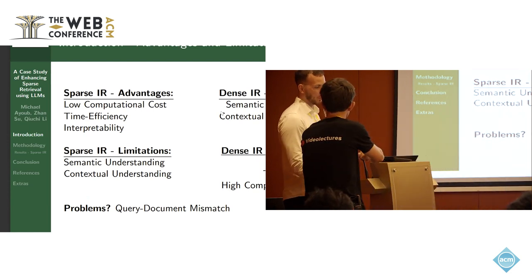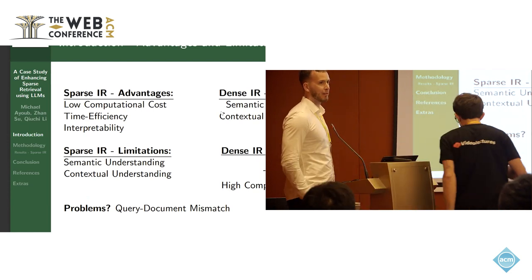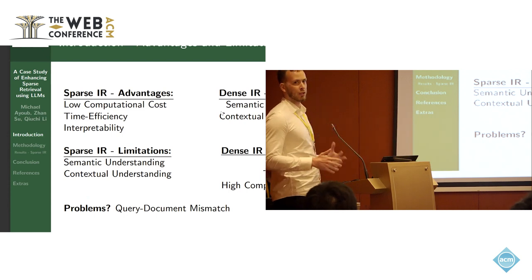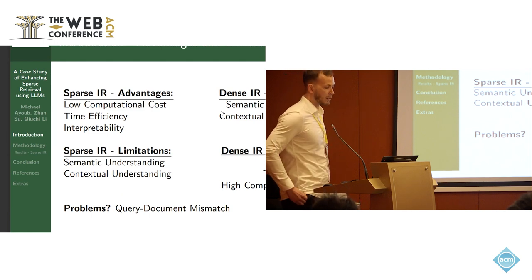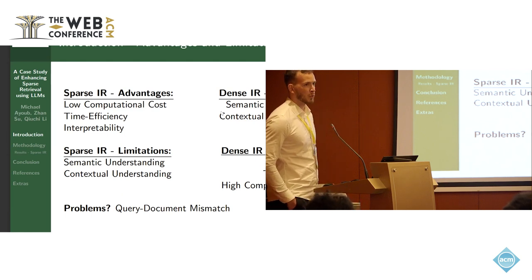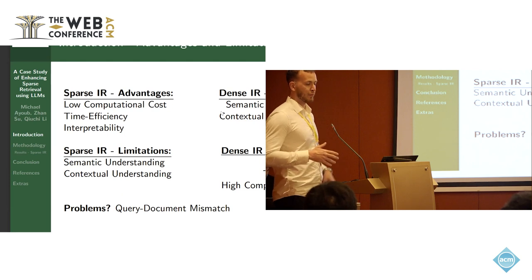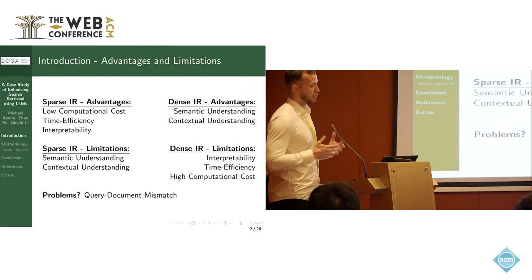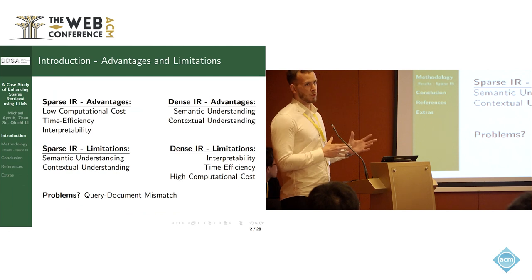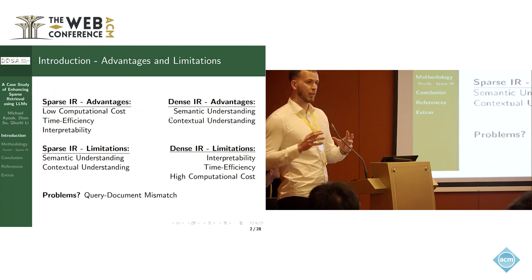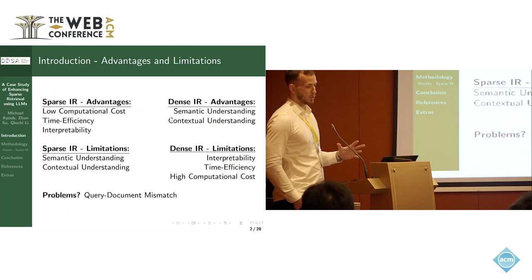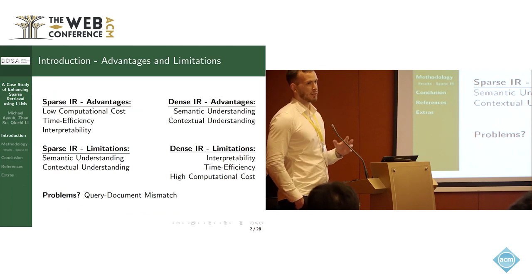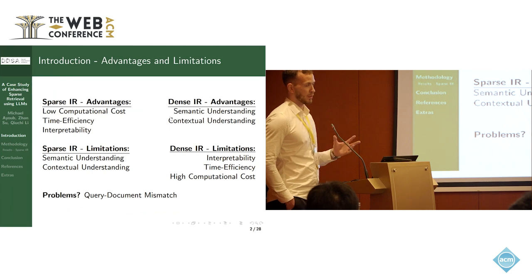I assume everyone is familiar with information retrieval in general, so I will not discuss much about that. Instead, I will simply go towards the advantages and disadvantages of especially sparse IR. For sparse IR, we know that due to the way we do text representation, we transform from text to sparse encoded vectors, so sparse IR in general comes with a low computational cost, it's very time efficient, and it's also an easy-to-interpret method.